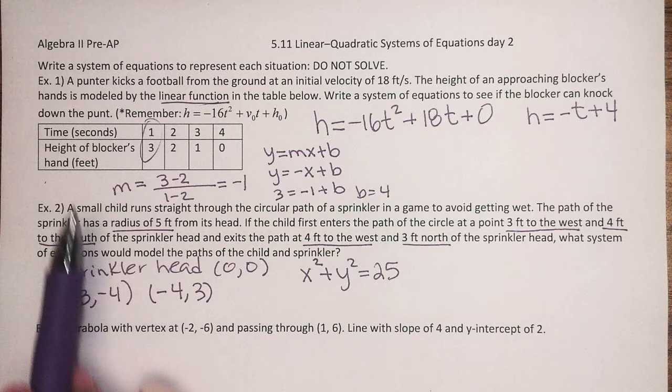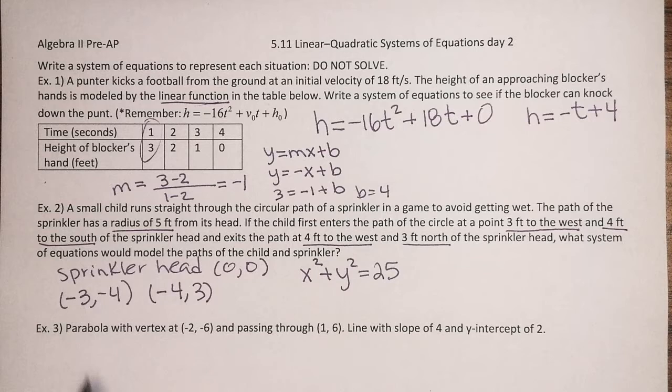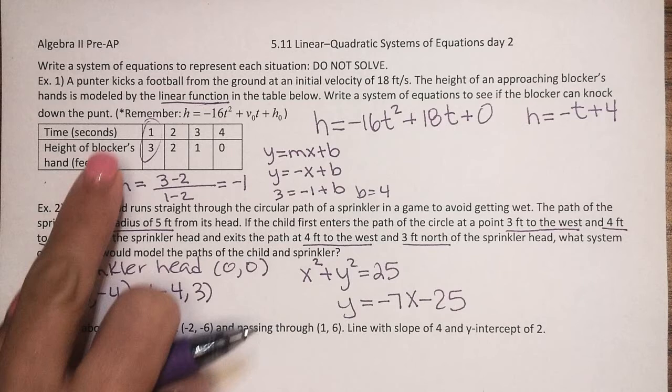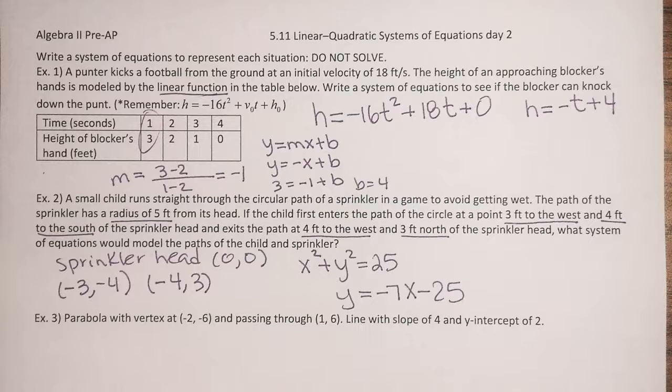And now here you just have your two points, and that's going to be a linear path. And you can do what I did on example 1, find the slope, and then find the y-intercept, so that you can find the equation for the linear path of the child here. So if you do that, you should get y equals negative 7x minus 25. Remember, you just have to find the slope like I did on example 1, and you have to find the y-intercept like I did on example 1. And that gives you the second equation for number 2.